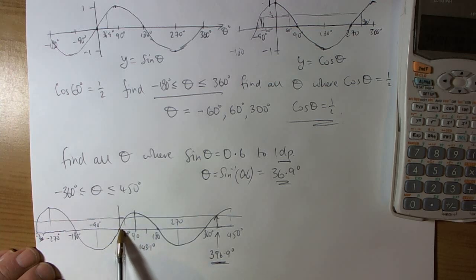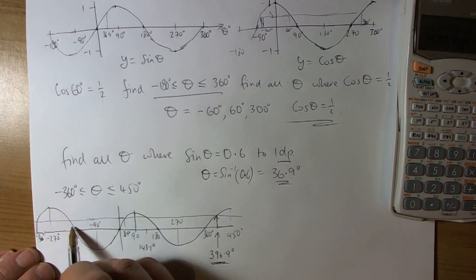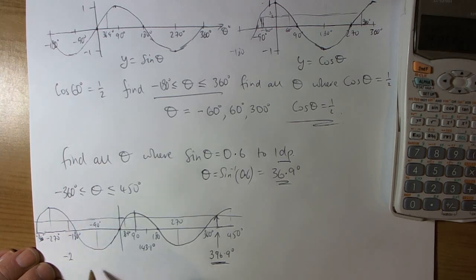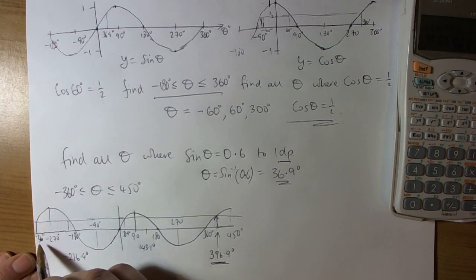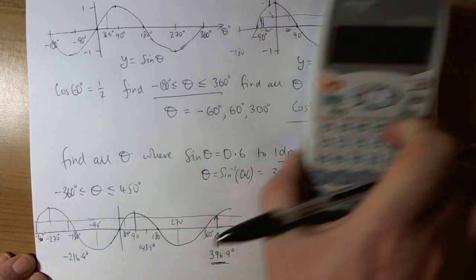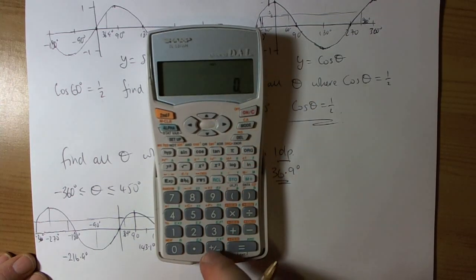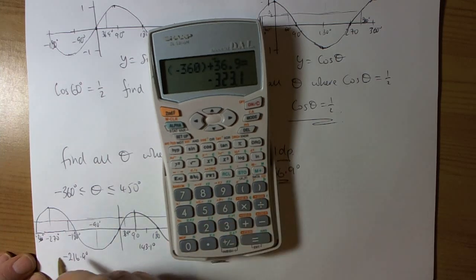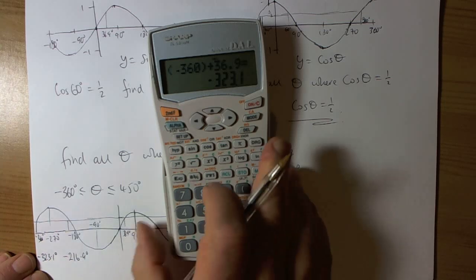So 143.1 degrees. And then again we can see from here that if we come over to this side then that's going to be minus 216.9 degrees. And then we're going to be adding 36.9 to negative 360. So that's a couple of questions there. 360 negative plus 36.9, so negative 323.1 degrees.